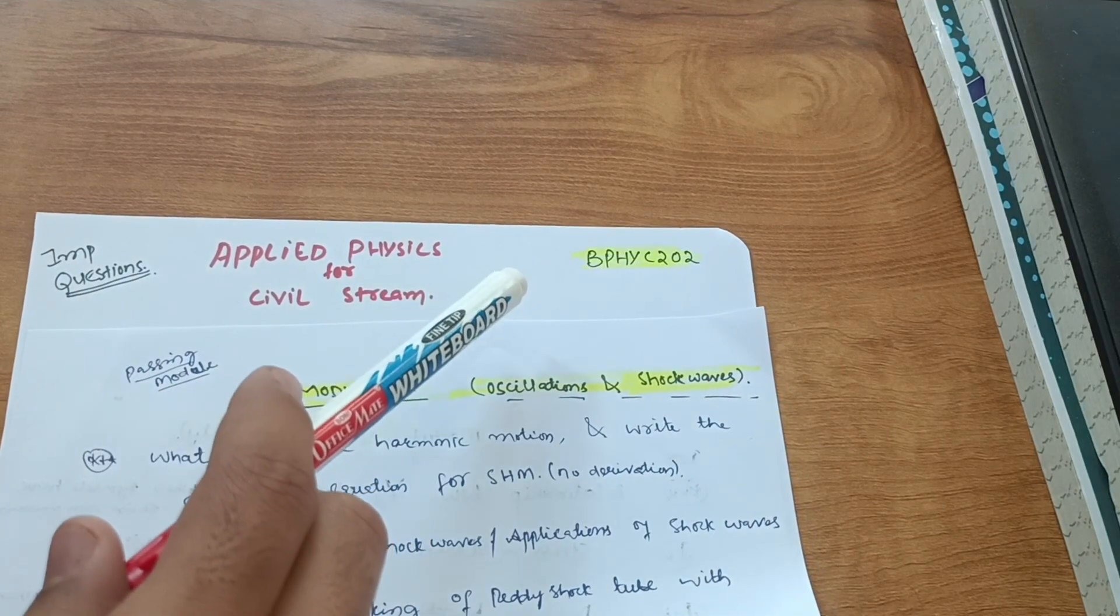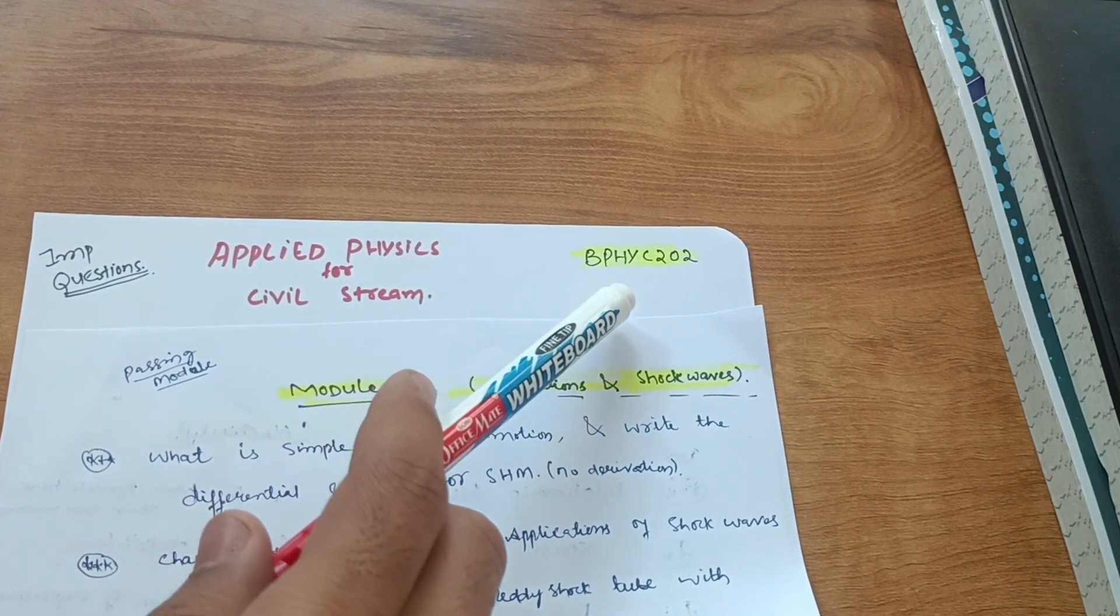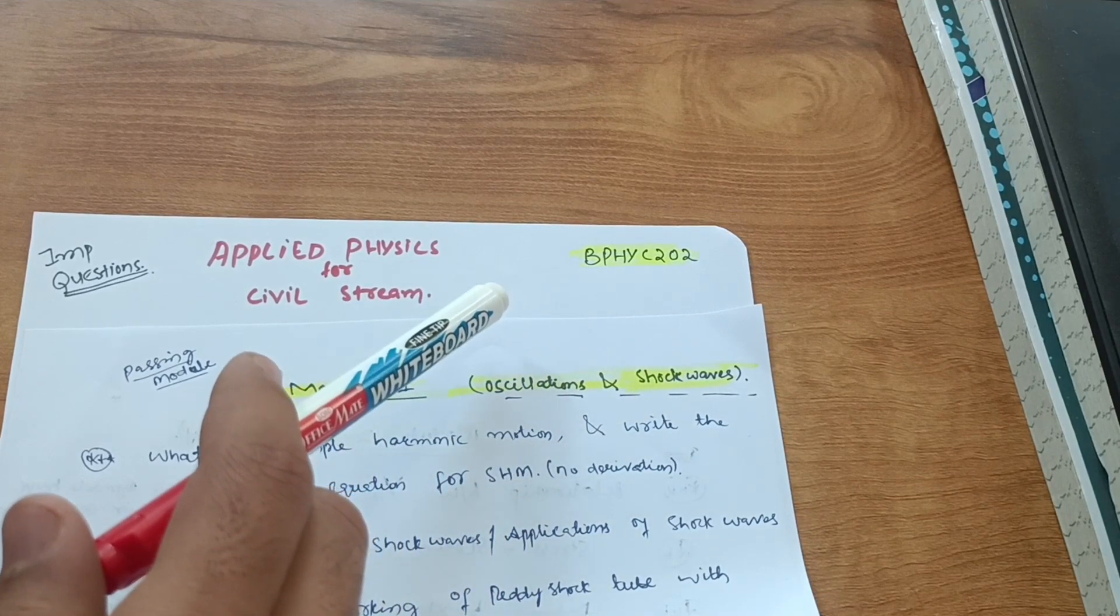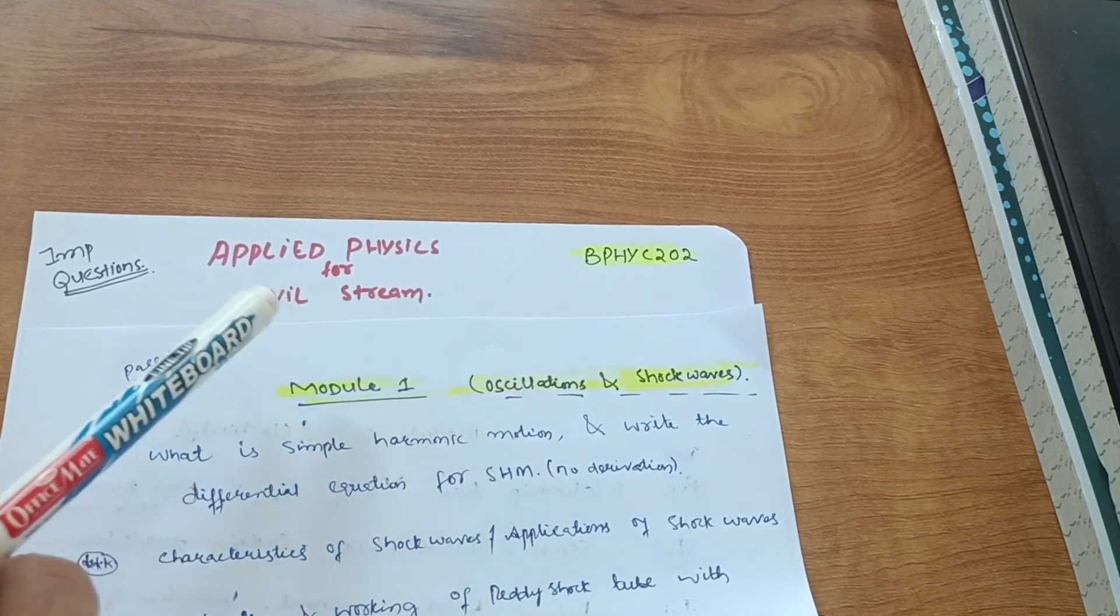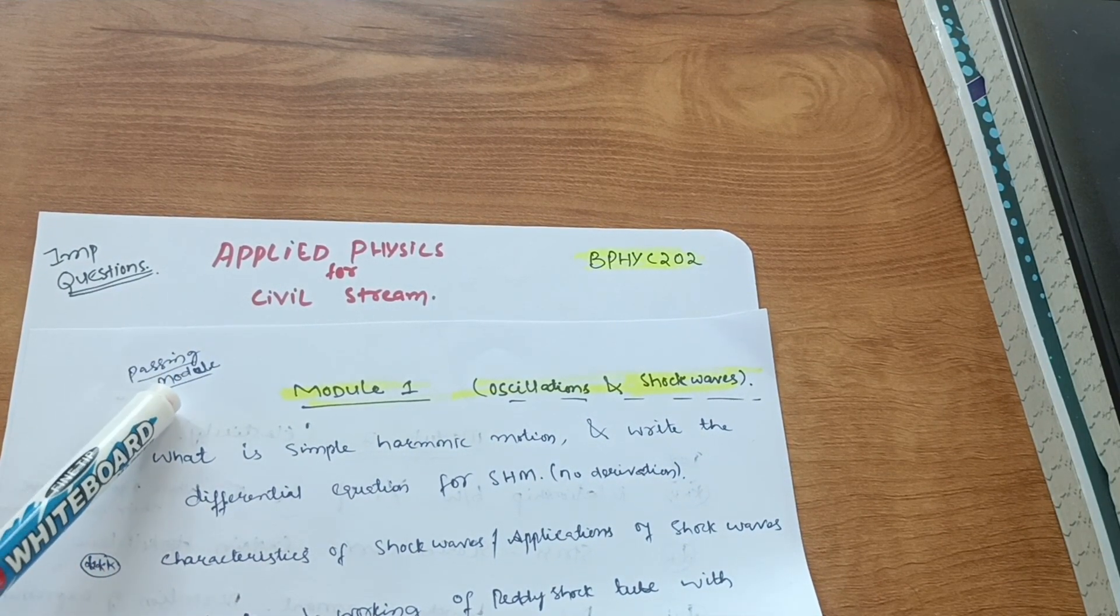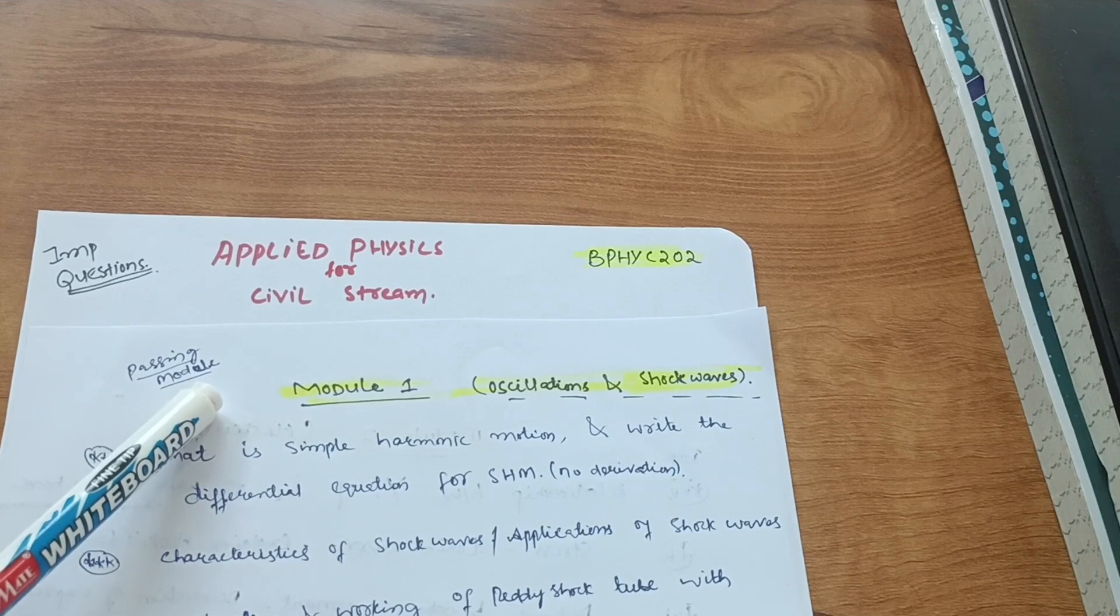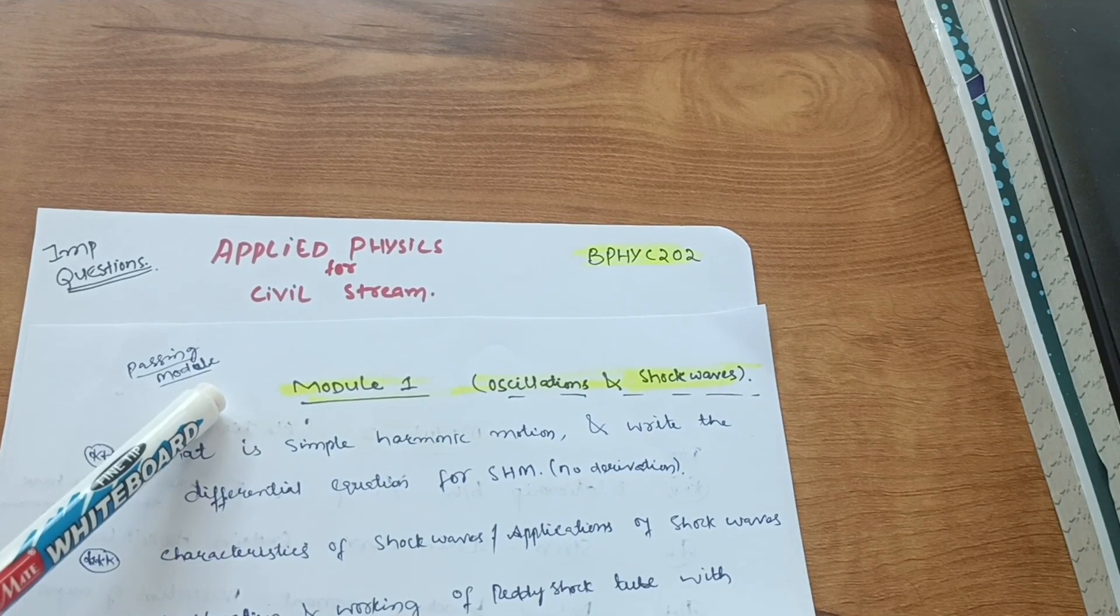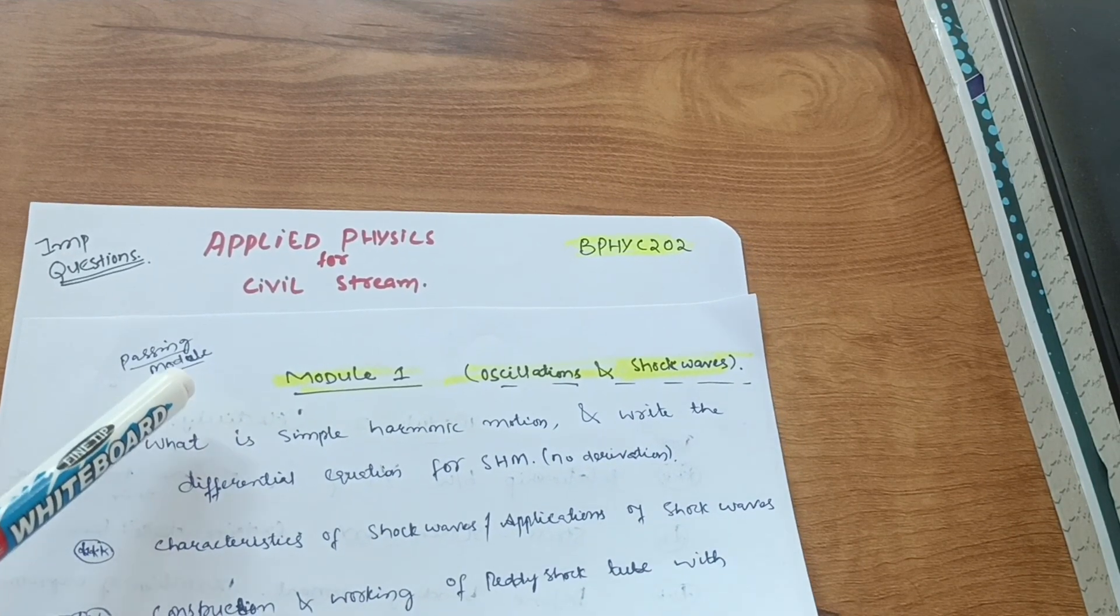My dear friends, today this is for civil stream students, Applied Physics subject. The subject code is BPHYC202 or 102 if you have a backlog in this particular subject. It is for regular students and those currently studying this subject.